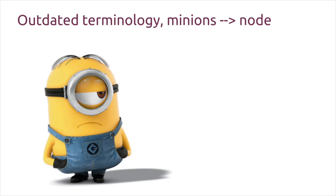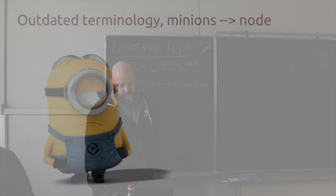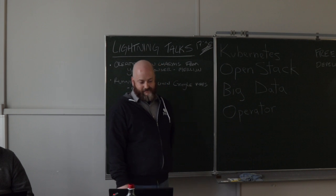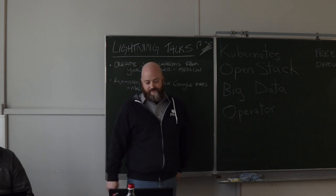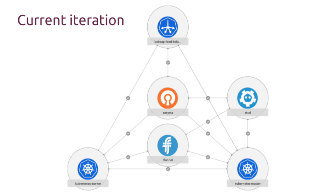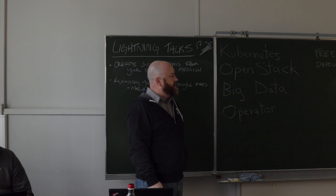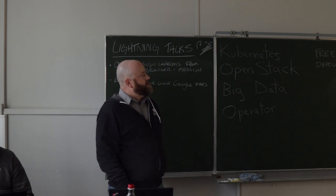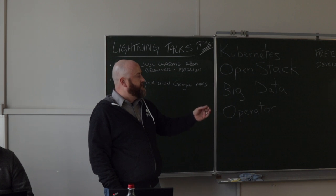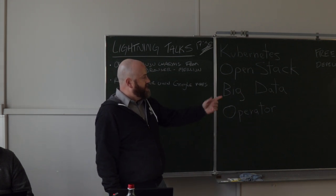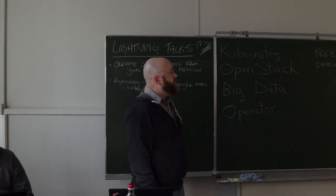Around that time, the 'minions' terminology was retired — they decided to rename minions to 'node.' So goodbye, little cute dudes. That was about August 2014. Our next iteration, which is our current iteration, is pure vanilla upstream Kubernetes — we're not editing any files or doing our own version. We split out the notion of the Kubernetes worker and the Kubernetes master. We still have etcd, but now we have TLS with EasyRSA.